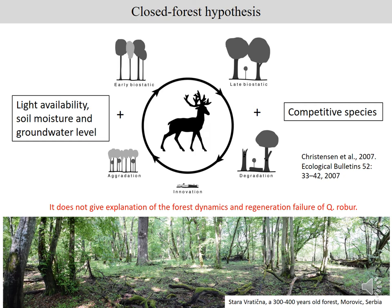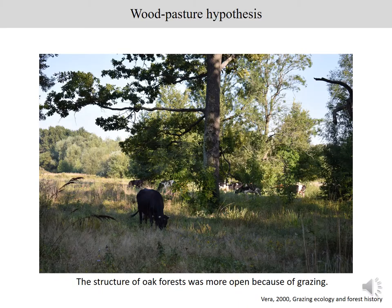But there are places, according to our experience, where there is no high game pressure and there is high light availability and soil moisture, yet there is no natural regeneration — like these stands in Serbia. Others explain that not gaps or closed forests, but rather a much more open landscape, which dominated the European landscape in the past, was the right place for natural oak regeneration because oak forests were more open due to large grazers.